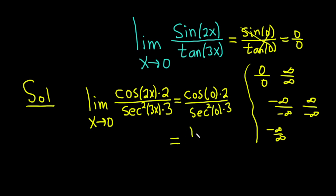Cosine of 0 is 1. We get 1 times 2, 2 over secant of x is equal to 1 over cosine x. So when you compute secant of 0, you're just going to get 1 over cosine 0.